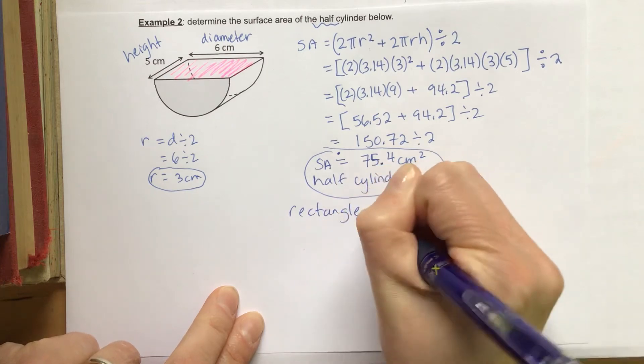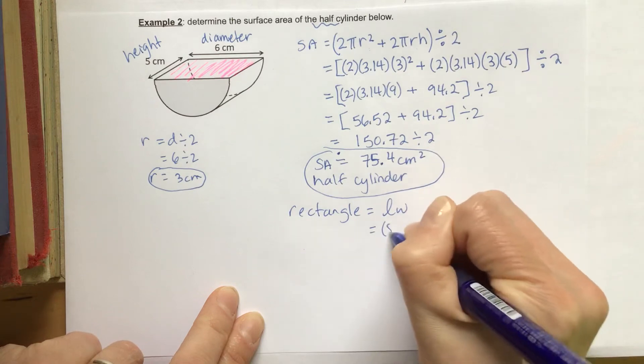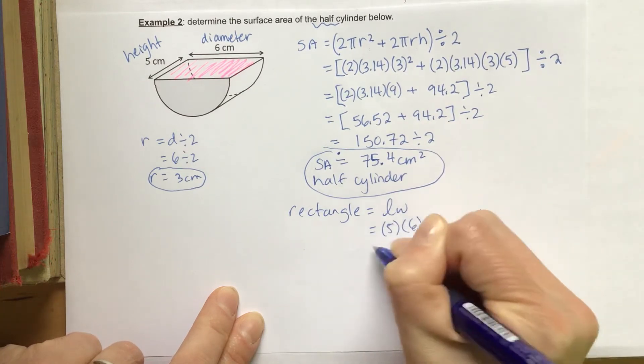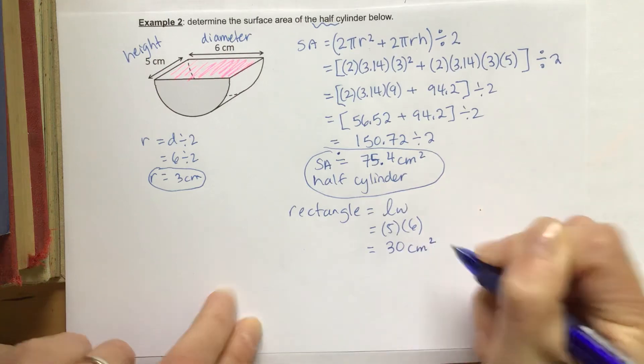So the area of a rectangle is length times width. So our length is 5, our width is 6, and that's going to give us 30 centimeters squared.